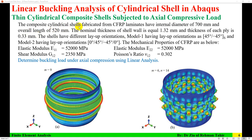The composite cylindrical shells fabricated from carbon fiber reinforced plastic laminates have an internal diameter of 700 mm and overall length of 520 mm. The nominal thickness of the shell wall is 1.32 mm and thickness of each ply is 0.33 mm, so it is a 4-ply laminate. The shells have different layup orientations: Model 1 has an asymmetrical layup of plus 45, minus 45; Model 2 has layup orientation 0, 45, minus 45, and 0.